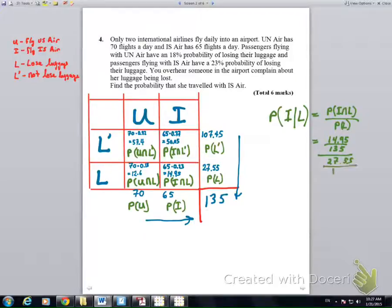And then 27.55 lost their luggage total. So basically, it's lost their luggage and went on IS Air out of the total people who lost their luggage altogether out of 135. So, that just simplifies, and we end up with a 54.3% approximate chance that somebody who lost their luggage flew with IS Air.